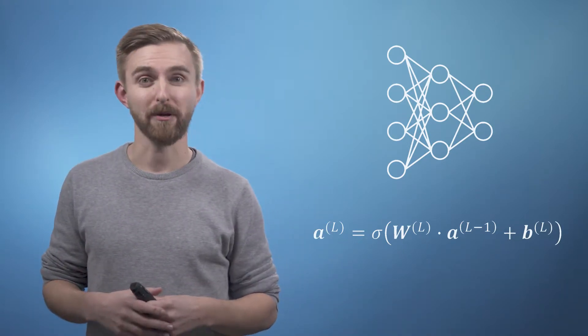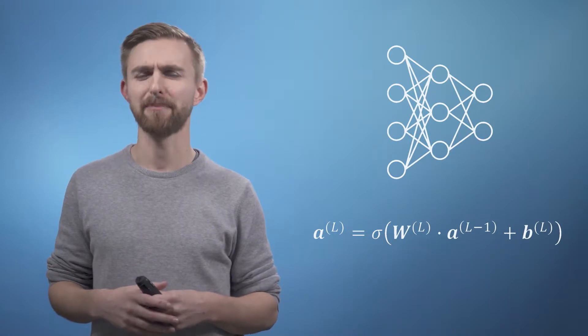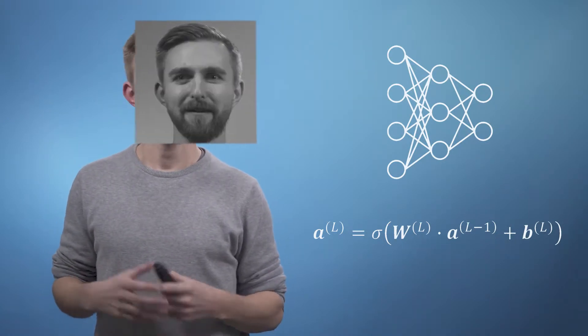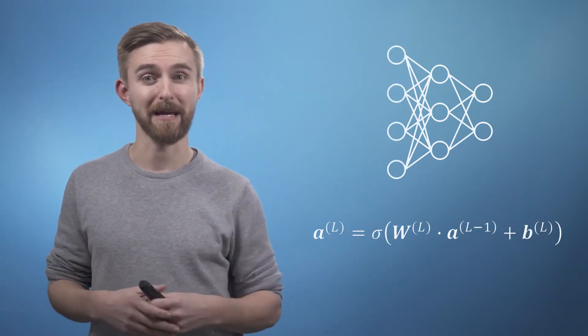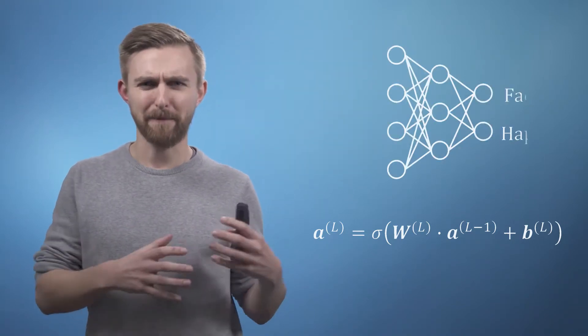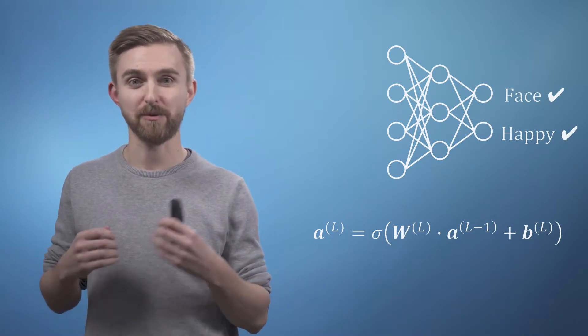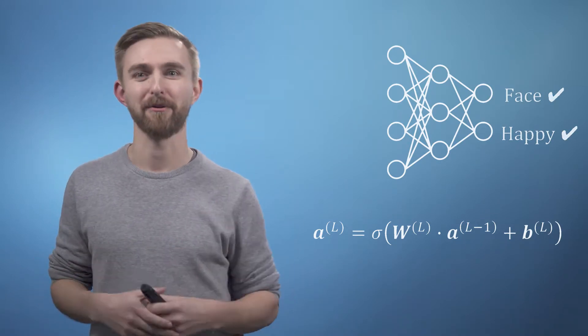For example if we were to build a network to recognize pictures of faces and predict if they were happy, then for our training data each of the inputs might be the intensity of a single pixel from the image and this would be paired with an output which just says whether this image contains a face and whether it was a happy face.